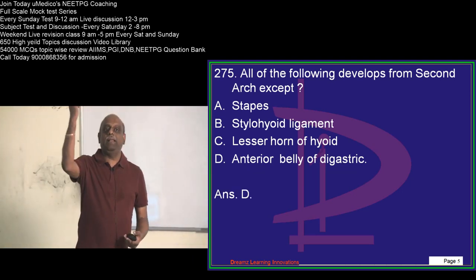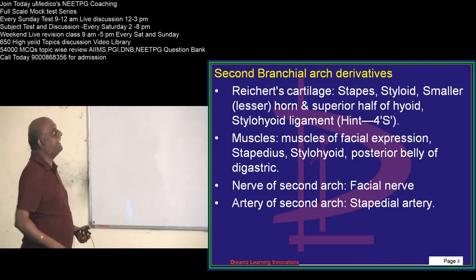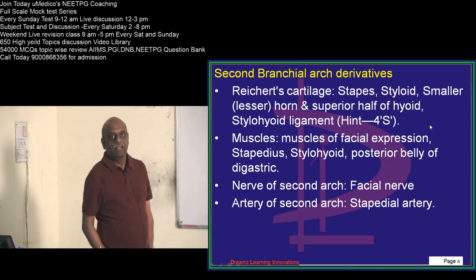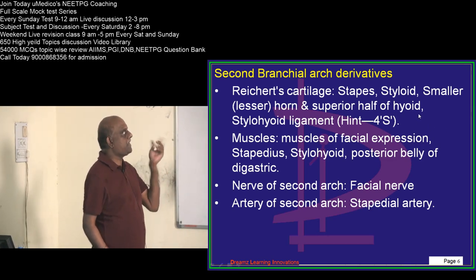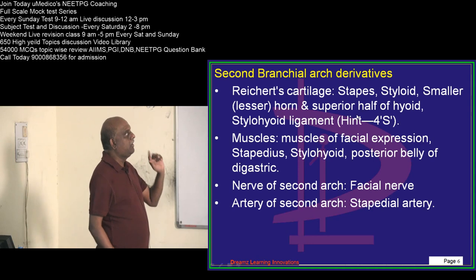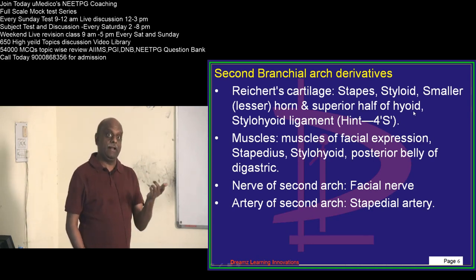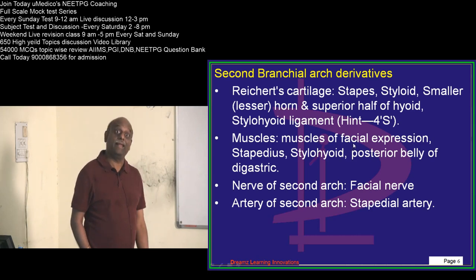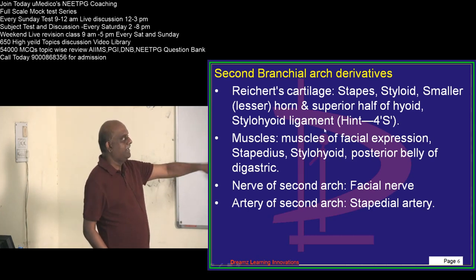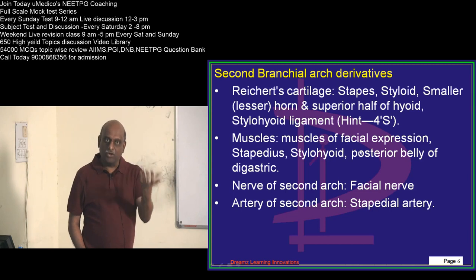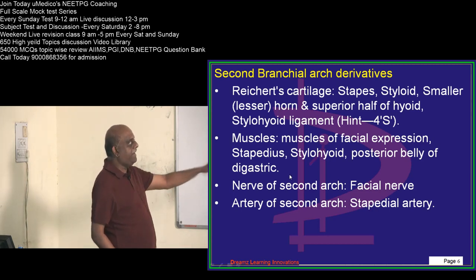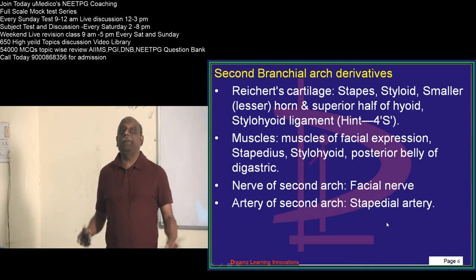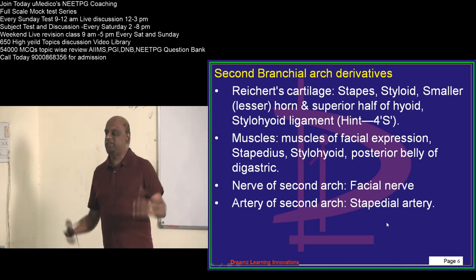What comes from the second arch? You ought to remember four S: S for stapes, S for styloid, S for smaller horn of the hyoid, S for superior half of the hyoid — and the stylohyoid ligament are the ones from the second arch, for whom the seventh nerve is the nerve of the arch. Stapedius, stylohyoid, and posterior belly of digastric are all involved, and the stapedial artery is the artery of the second arch.